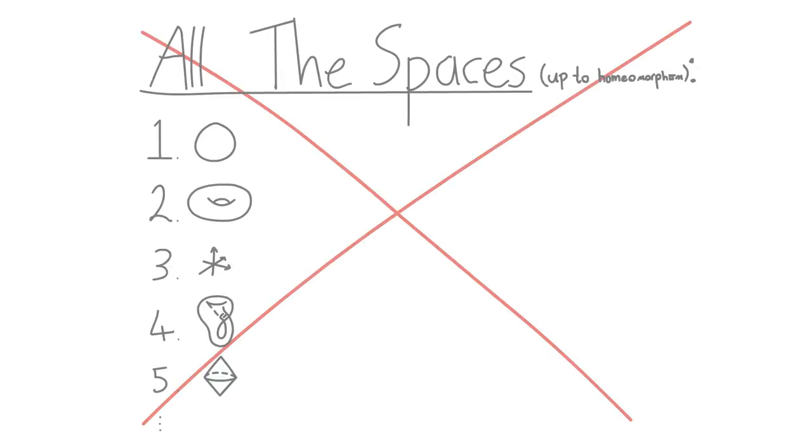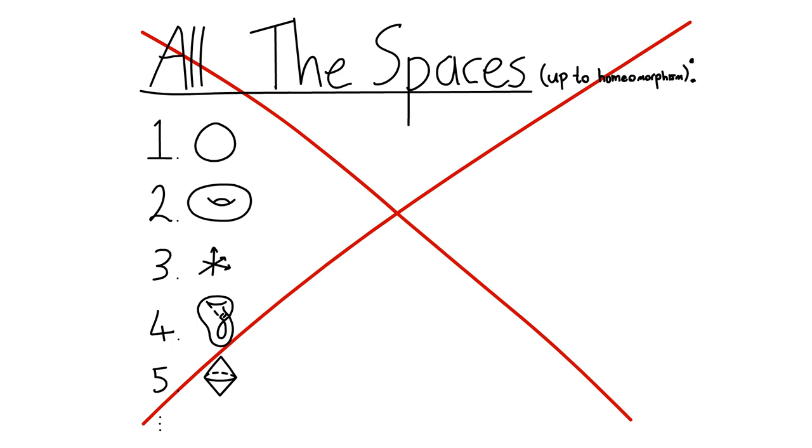Unfortunately, it's still extremely impossible to classify topological spaces even up to homeomorphism. There's just too many possibilities. So, how do we go about understanding topological spaces up to homeomorphism?